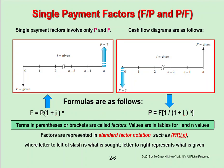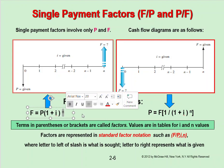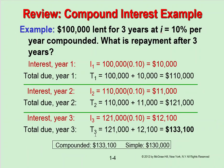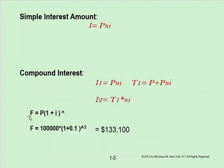With the formula approach, you give me the present worth, the interest rate, and how many years, and I can tell you exactly what the future amount is. Using the formula F = P × (1 + i)^n, given P = 100,000, i = 10%, and n = 3 years, I can calculate F = 133,000 directly.